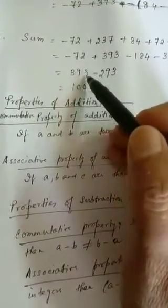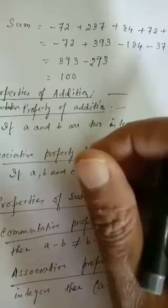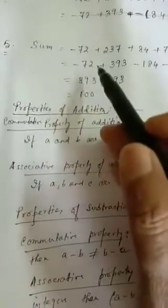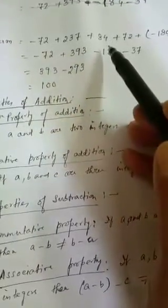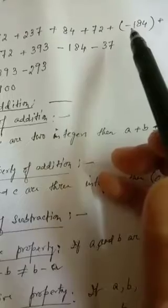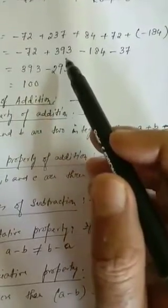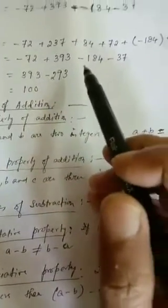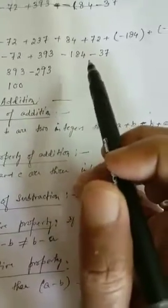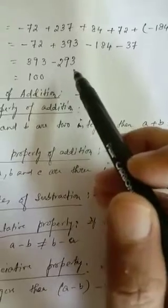Next, number 5: find the sum of integers minus 72, 237, 84, 72, minus 184, and 37. Write: minus 72 plus 237 plus 84 plus 72 plus (minus 184) plus (minus 37). Group negative numbers in brackets. Add the positive numbers: 237 plus 84 plus 72 equals 393. Add the negative numbers: minus 184 minus 37 equals minus 221. Wait — minus 72 plus 393 gives 393 minus 72 equals minus 293 combined with negatives: 393 minus 293 equals 100. The answer is 100.